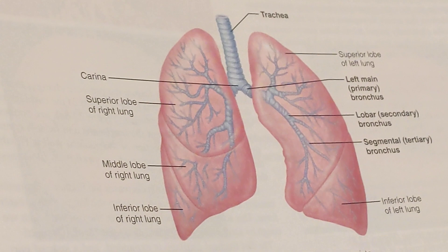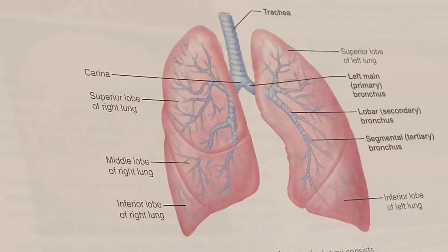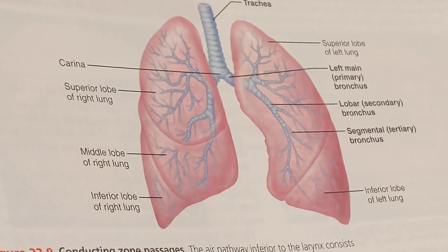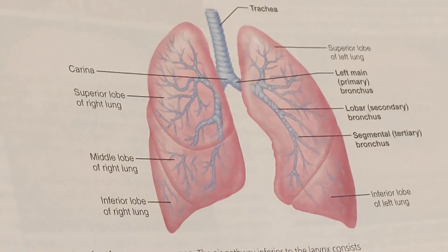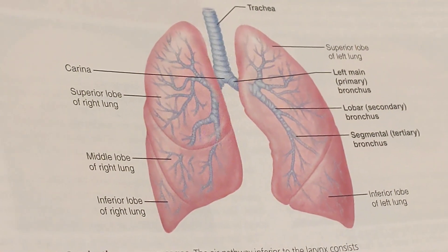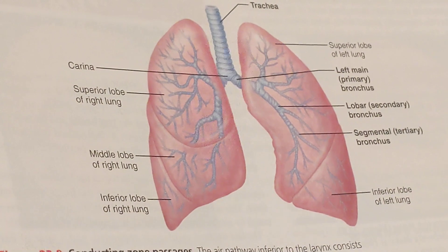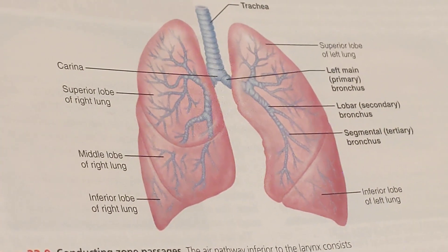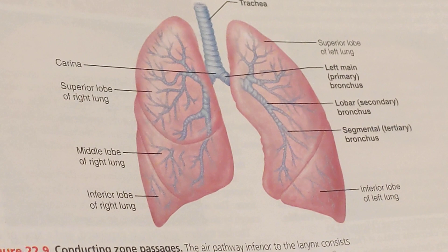Inspiration is when air moves into the lungs from the atmosphere, and expiration is when air from the lungs moves outside into the atmosphere. When the lungs increase in dimension, the drop in pressure causes air to rush inside because gases flow down their pressure gradients.